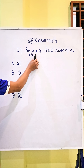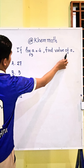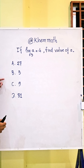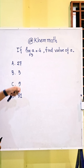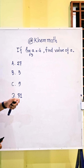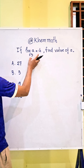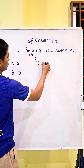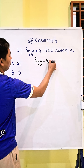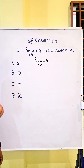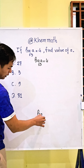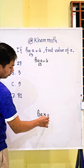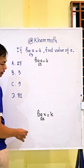If log base 3 of a equals 4, find the value of a. The answer choices are: A) 27, B) 3, C) 9, and D) 81. To find the value of a, we use the formula: if log base a of x equals k,